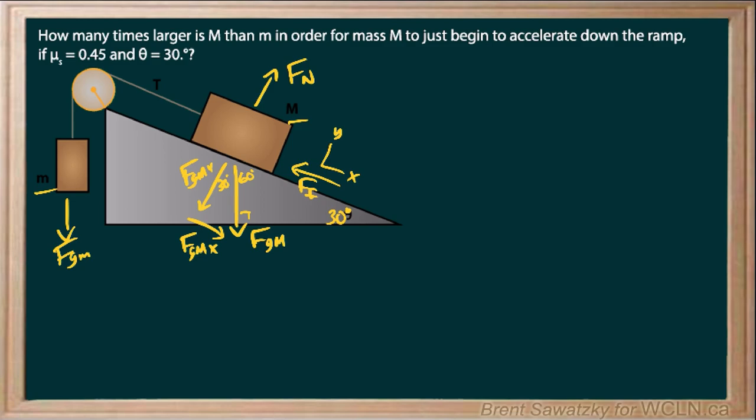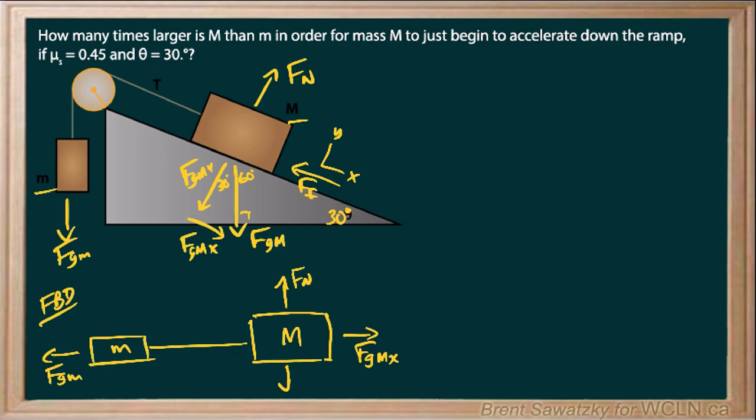Now, when we're doing a problem like this, we quite often find it handy, make our lives easier by making a bit of a modified free body diagram. And that means that if we shift everything so it looks as though it's just going left or right, it helps us enter equations, just keeping things straight. And so if little M is here and big M is here, then pulling to the left, we would have FG little M. Pulling to the right, we'd have FG big M X.